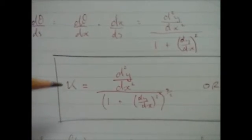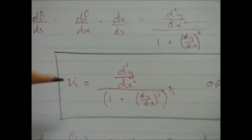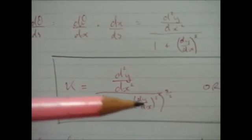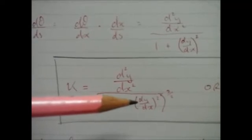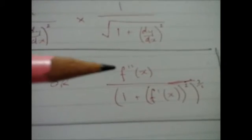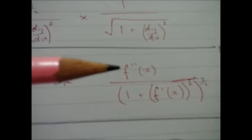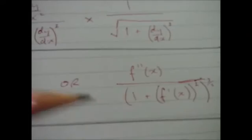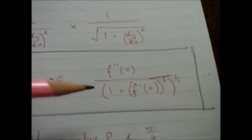This is the formula for curvature. It's the second derivative over one plus the derivative squared, all of that to the power three over two. Or if you want it in function notation, it's f double prime of x over one plus f prime of x squared, and the whole thing to the power three over two.